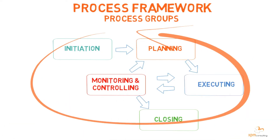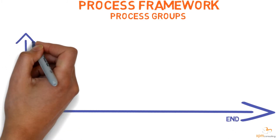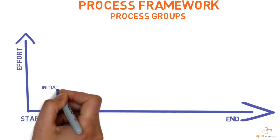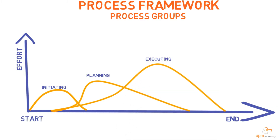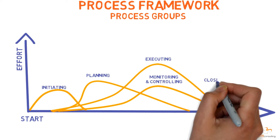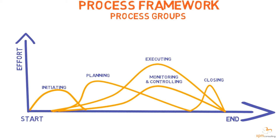Process Groups represent the second dimension of the Project Management Framework. Project Process Groups are used to categorize processes according to their purpose. According to the PMBOK Guide 6th edition, there are five Project Management Process Groups: Initiating, that defines and authorizes the project or phase; Planning, that defines project objectives and the actions required to attain them; Executing, that coordinates all the resources to carry out the plan; Monitoring and Controlling, that measures progress to identify variances and take corrective or preventive action; and finally Closing, that brings the project or phase to a controlled end.